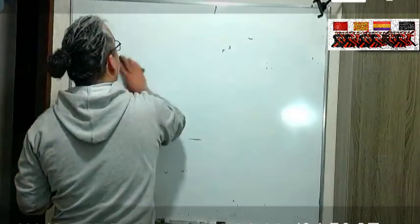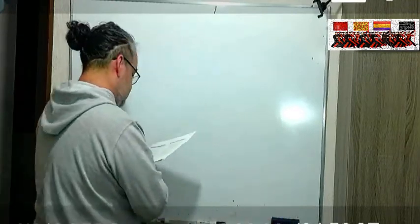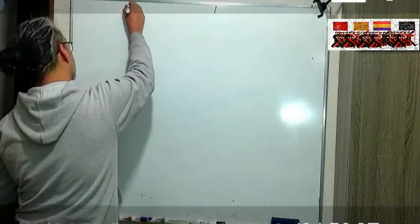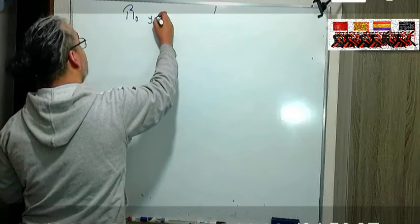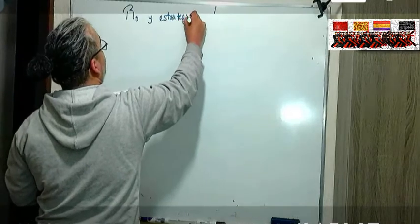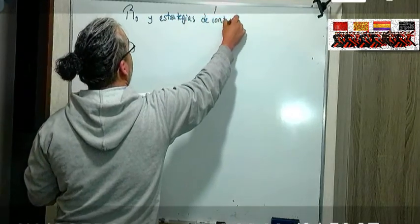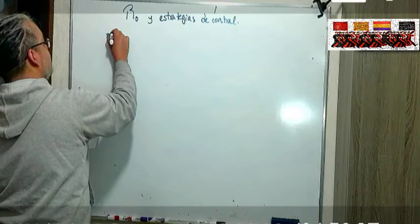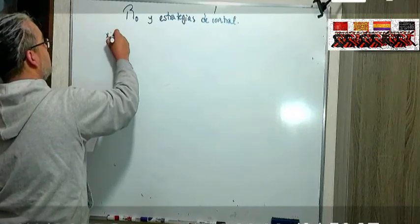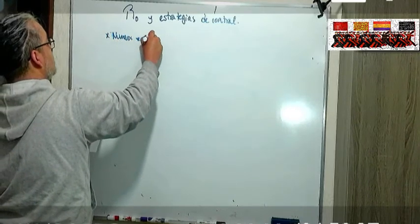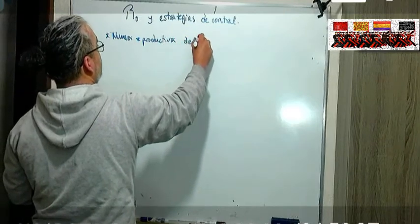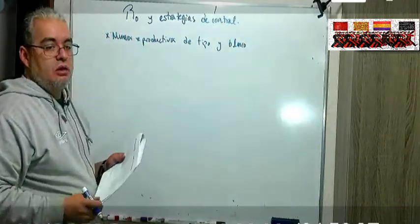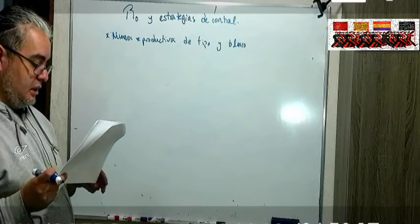Esto sigue siendo trabajo de Colin van den Driessche. Entonces vamos a ver el R0 y estrategias de control. Entonces lo primero es definir los números reproductivos de tipo y de blanco, como en un tiro, target se le dice en inglés.